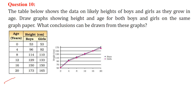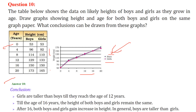A table showing likely heights of boys and girls at different ages is used to draw a graph. The x-axis represents age and the y-axis represents height. Two line graphs are shown — black for boys and purple for girls. Girls are taller than boys until around age 12; from age 12 to 16 they are almost the same. After age 16, boys become taller than girls.